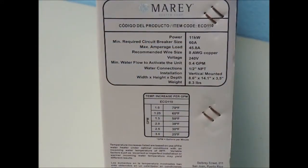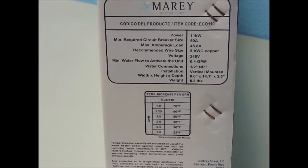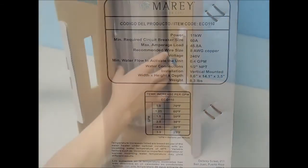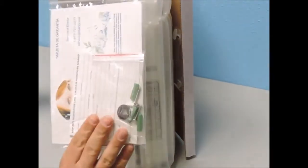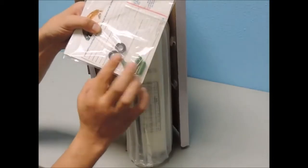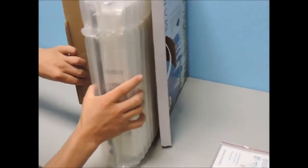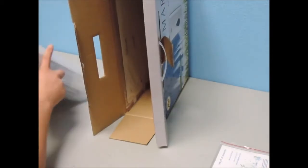Before removing from the box, be sure to confirm with the technical specifications that the Eco 110 is the correct unit for you. Now, let's remove the contents of the box. We should have the packet with the manual, mounting hardware, and some spare gaskets. The one with the screen is for the water inlet. There will also be the mounting template, and lastly the heater itself.